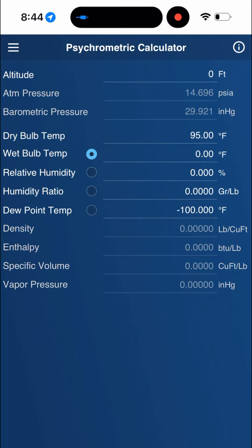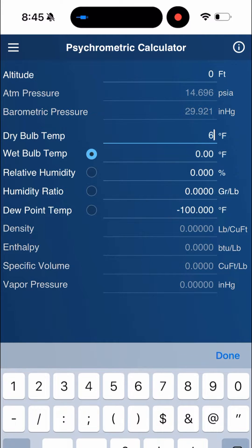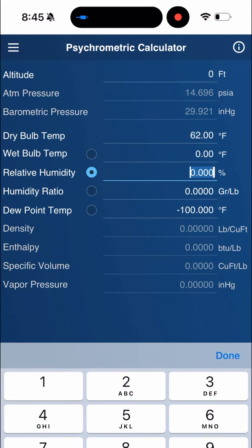So here's a psychometric app I have on my phone, and you can plug in the conditions and get the actual grains of moisture. We'll plug in the 62 degree dry bulb and then click on the relative humidity, plug that in here, which is 44%. And you can see the grains are 36 grains per pound for the first air condition.